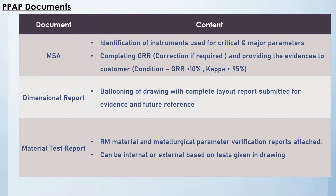The ninth document is dimensional reports — simple ballooning drawing and complete layout report submitted for five numbers as evidence and future reference to the customer. The tenth document is the material test report. Here, raw material and metallurgical parameters of processes all have to be verified, and the reports attached. This testing can be done internally or externally, and all reports must be properly attached for reference.